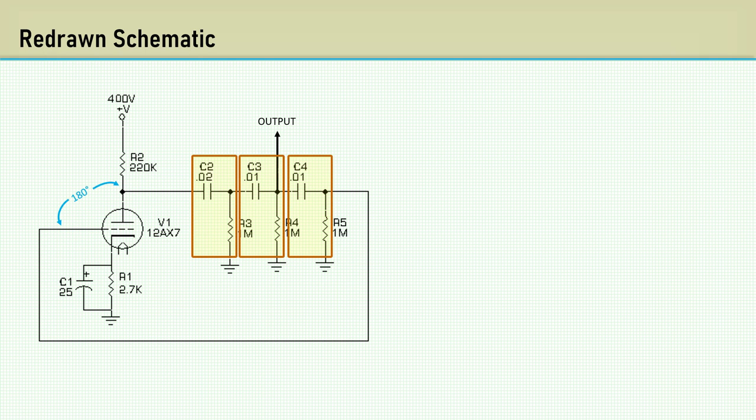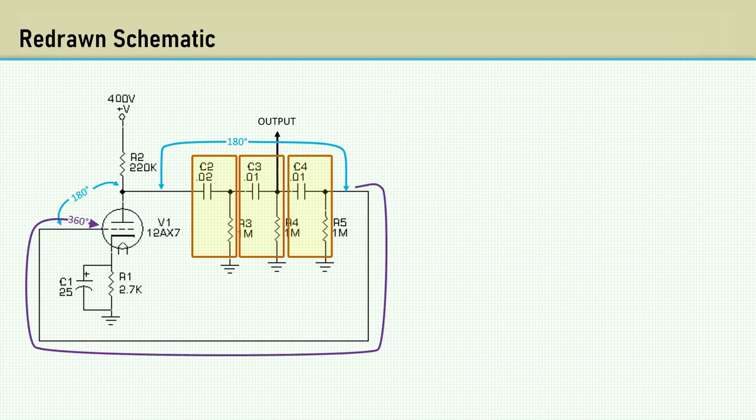The RC network adds an additional 180 degrees of phase shift. The output of the network is fed back to the input of the amplifier, shifted by 360 degrees, which is in phase. This is how oscillation happens.